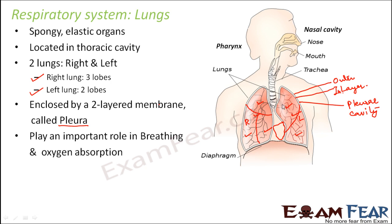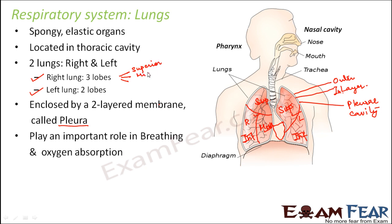Looking at the different lobes: the lobe on the upper side is known as the superior lobe, and the lobe below is called the inferior lobe. In the right lung, this is the superior lobe, this is the inferior lobe, and this is the middle lobe. So the three lobes in the right lung are superior, middle, and inferior, and the two lobes in the left lung are superior and inferior.